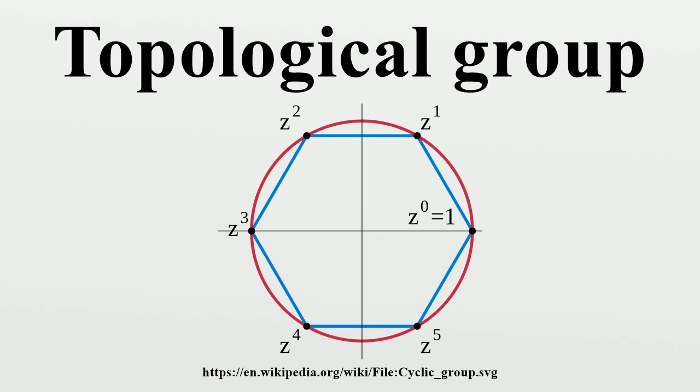A topological group G is Hausdorff if and only if the trivial one-element subgroup is closed in G. If G is not Hausdorff then one can obtain a Hausdorff group by passing to the quotient space G/K